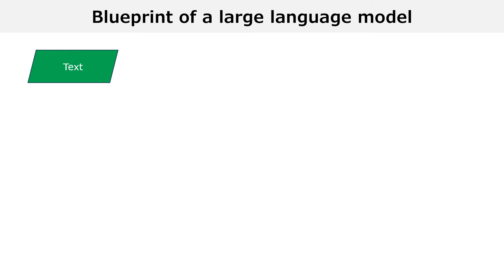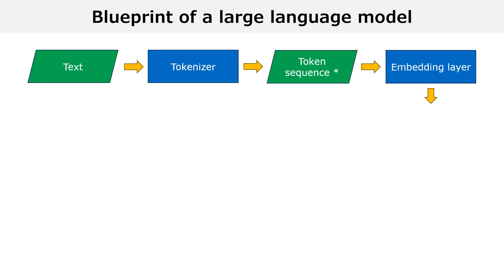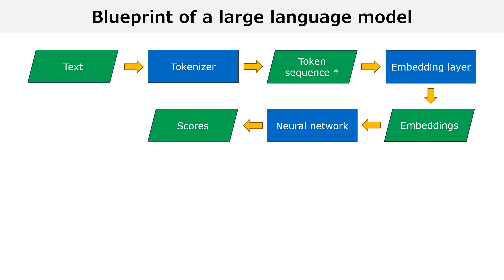Let us summarize what we have learned so far in a blueprint for a complete language model. We start with a block of text and we feed it to a tokenizer that encodes the text into a sequence of tokens. Then we use a so-called embedding layer to convert the sequence of tokens into a sequence of embeddings, which are real vectors. The embeddings undergo some non-linear transformations, performed by a neural network. The output of the neural network is a vector of scores. There is one score for each of the possible values of the next token. The higher the score of a given value, the higher its probability is. The scores are fed to a softmax layer and transformed into probabilities.